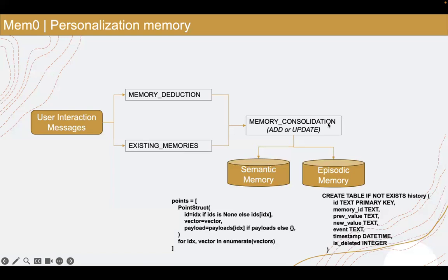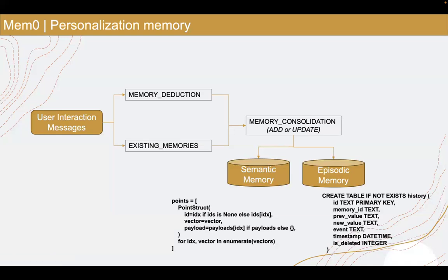The memory consolidation process is powered by an LLM, and so is the memory deduction process. If you are using OpenAI with Mem0, the default model is GPT-4o. GPT-4o does memory consolidation — it looks at extracted memory and existing memory, and if they are about the same thing, it will not add a new memory but update an existing one. It's a function call deciding whether to call an add, update, or delete function.